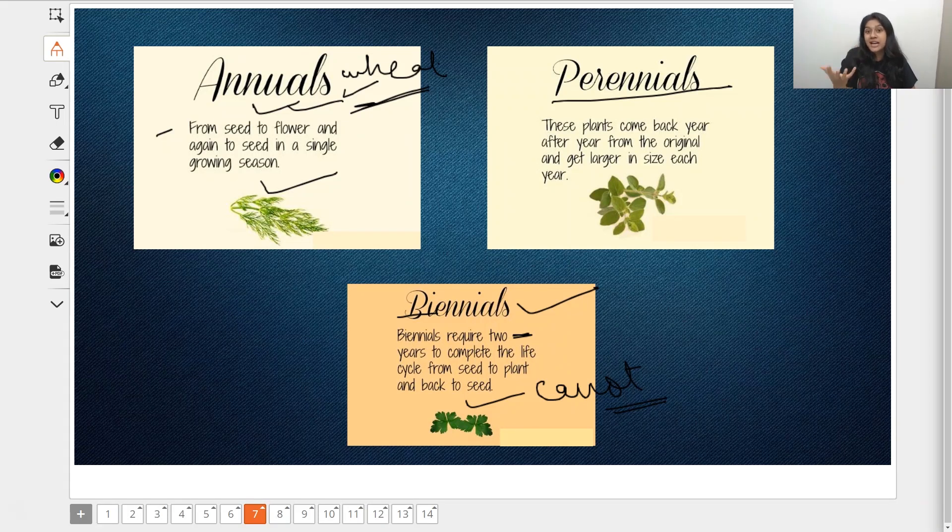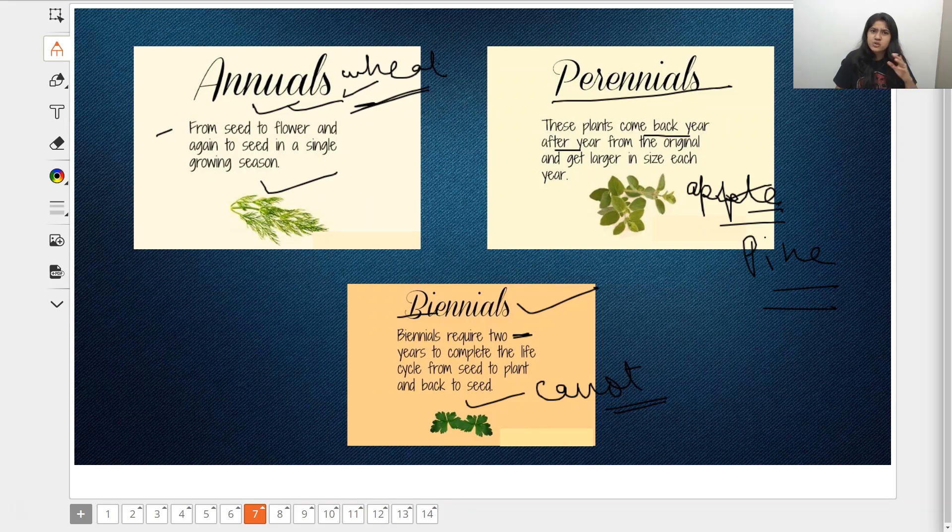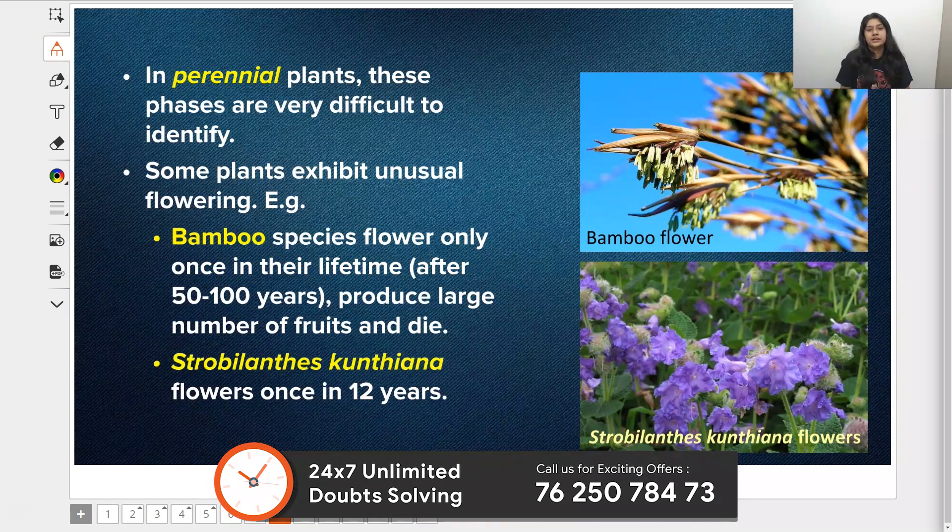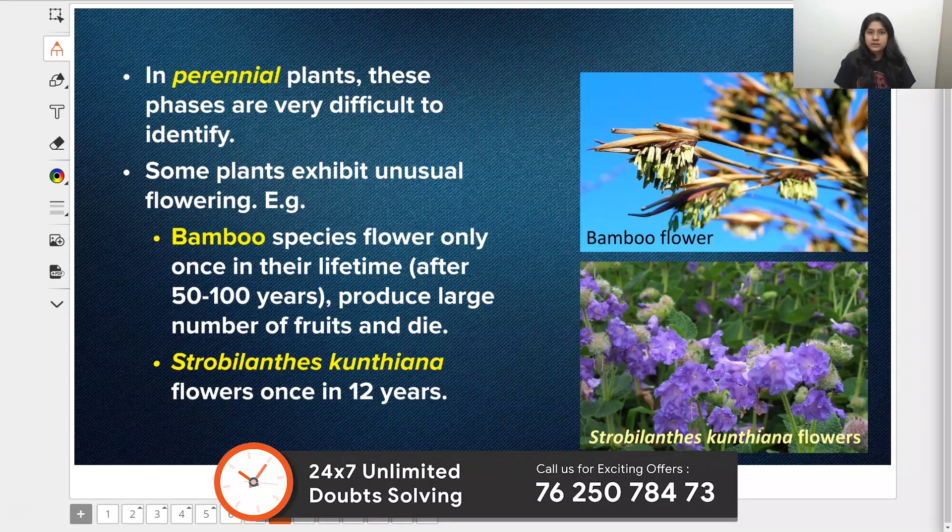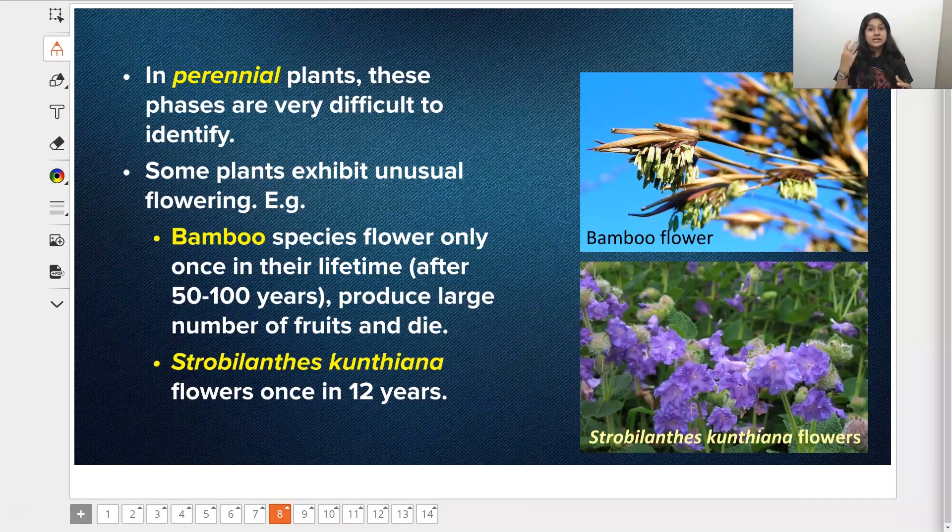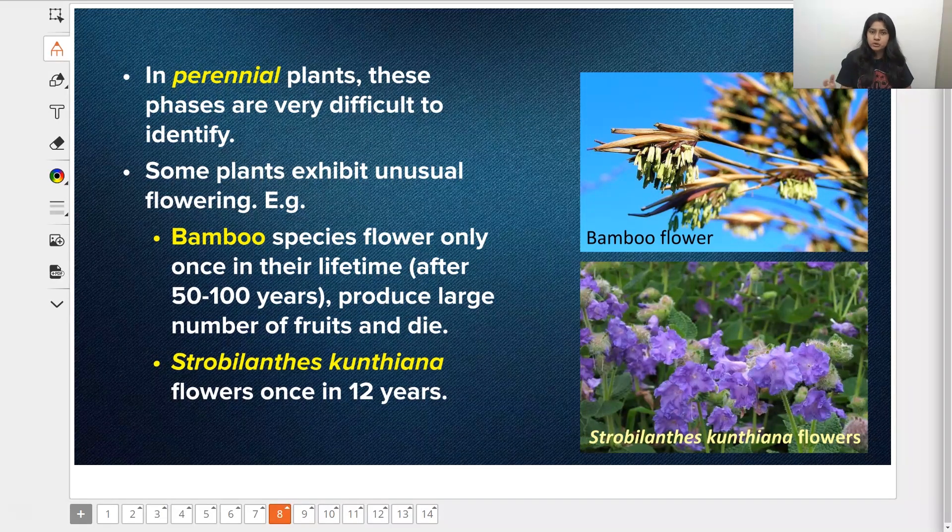Third is the perennial plants. These plants come back year after year from the original plant and grow more in size. Can you tell me the example? The apple tree or the pine tree are examples of these particular plants. Very strange but it's a fact. Now we have different types - look at the picture of bamboo.